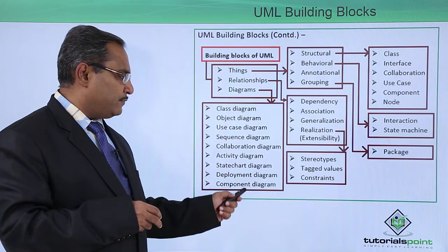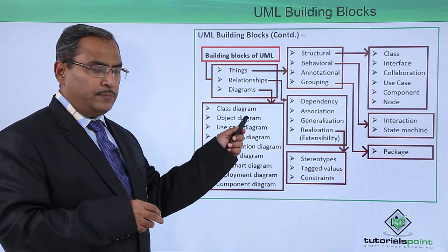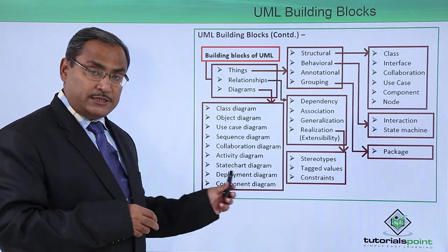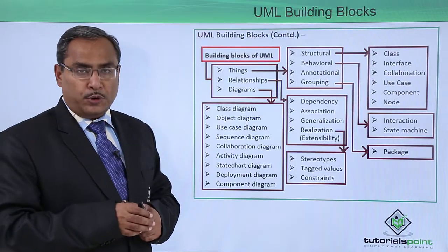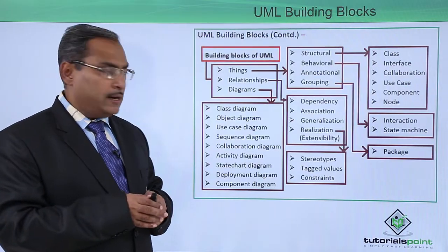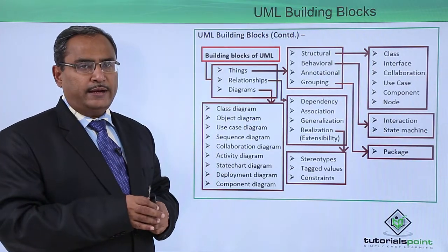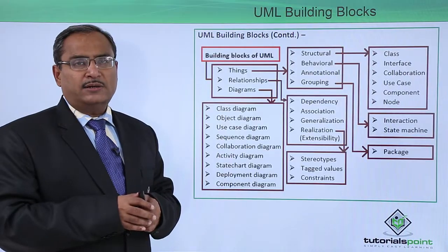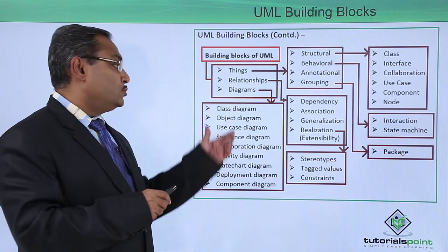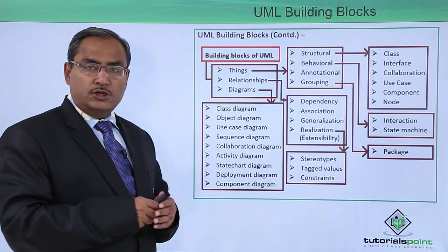We are having nine distinct diagrams: class diagram, object diagram, use case diagram, sequence diagram, collaboration diagram, activity diagram, structure diagram, deployment diagram, and component diagram. Deployment diagram and component diagram come under implementation diagram, while sequence diagram and collaboration diagram come under interaction diagram. Each diagram has its own role to play — none can replace any other.